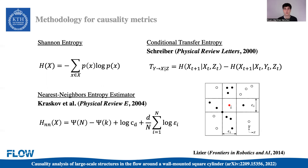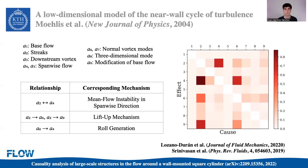Due to the discrete nature of the signals used in our study, the computation of these quantities is performed through estimations of the PDF of each signal and their corresponding entropy values, using the nearest-neighbor entropy estimator introduced by Kraskov and others. This estimator allows for the estimation of the entropy of a given variable when the number of samples is finite, and it relies on the principle of calculating distances between the different neighbors of a given sample. Before applying these methods to our main database, we validated them by identifying causal interactions in a low-dimensional model of the near-wall cycle of turbulence developed by Moellis and others in 2004.